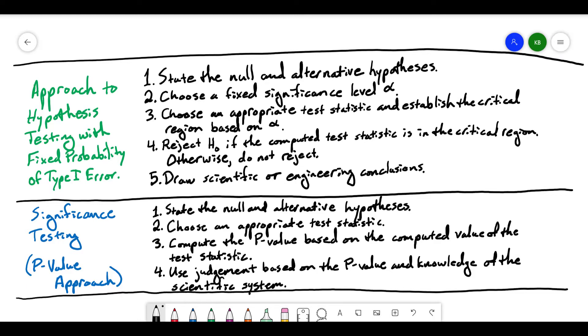When using the classical approach, the approach to hypothesis testing with fixed probability of type 1 error, you're going to go through five steps. First, you're going to state the null and alternative hypotheses. Second, you're going to choose a fixed significance level for alpha. You're going to choose that value—again, 0.05 and 0.01 are very common values to be chosen. Then you're going to choose an appropriate test statistic and establish the critical region based on the alpha value. Then you're going to reject the null hypothesis if the computed test statistic is in the critical region. Otherwise, you're not going to reject it—you're going to fail to reject. And then finally, the fifth step is to draw scientific or engineering conclusions based on having rejected or failed to reject the null hypothesis.